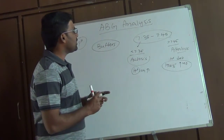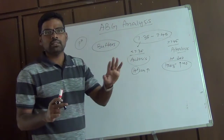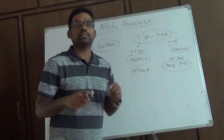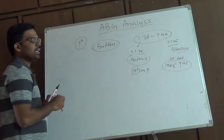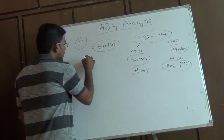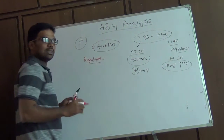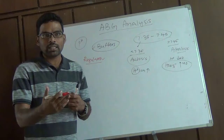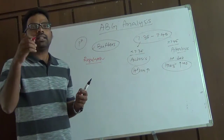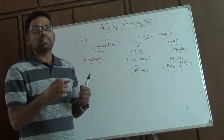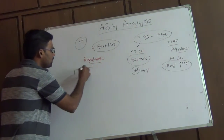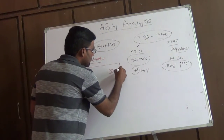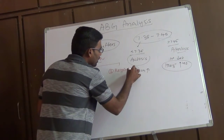This normal range of 7.35 to 7.45 is well maintained in the body with the help of buffers, the most important of which is hemoglobin. Whenever there is a distortion or variation in pH, it is regulated by two important systems in the body: number one, the renal system, and number two, the respiratory system.